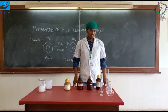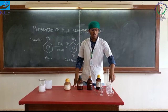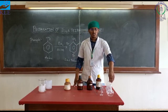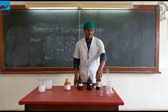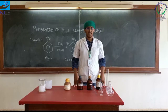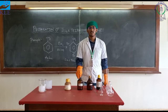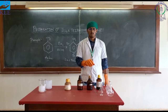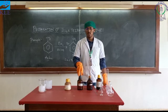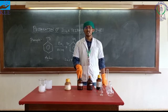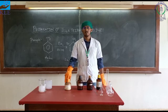The apparatus used are measuring cylinder, beaker, conical flask, round bottom flask, funnel, and glass rod pipette. The chemicals used in this synthesis are aniline, bromine, glacial acetic acid, and sodium bisulphate.